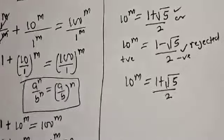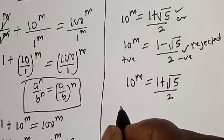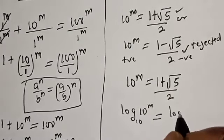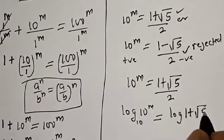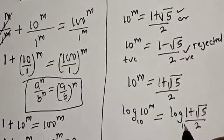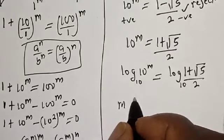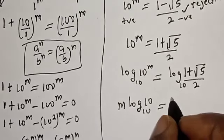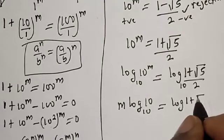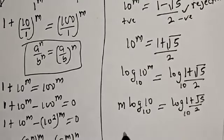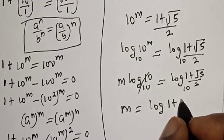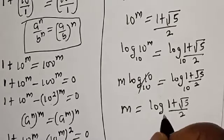Let's take the log of both sides, base ten. Log base 10 of 10^m equals log base 10 of (1 plus √5) over 2. This gives m times log base 10 of 10, which equals log base 10 of (1 plus √5) over 2. Since log base 10 of 10 equals 1, m equals log base 10 of (1 plus √5) over 2.